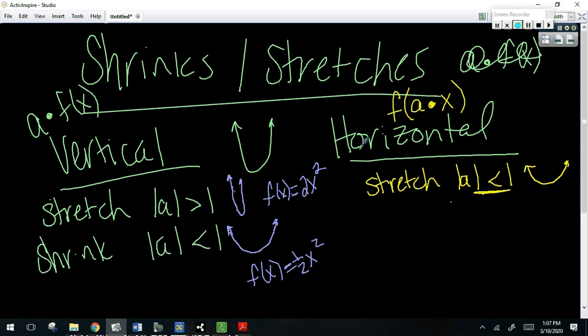But A is less than 1. Again, it's because it's horizontal. Everything with X is opposite, okay? And then a shrink is bigger than 1.